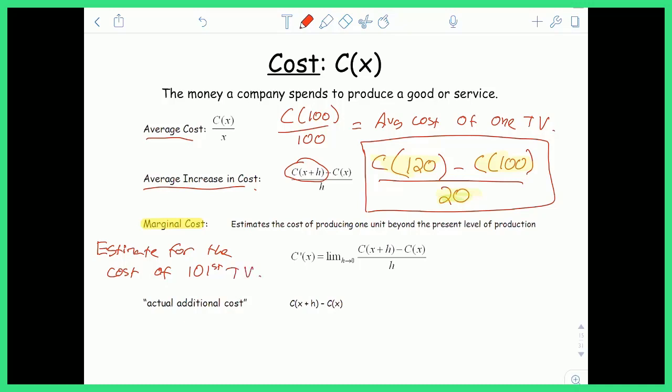So marginal cost estimates the cost of producing one additional TV. And it's very important you understand that this is just an estimation. This is not the actual value, this is just an estimation. Well, it turns out that in order to calculate this, you just have to take the derivative and plug in your value.